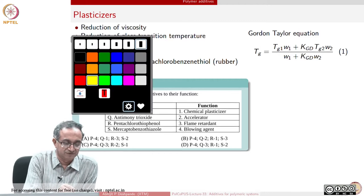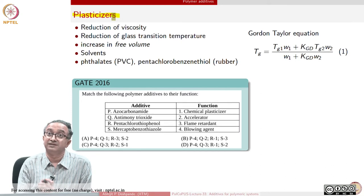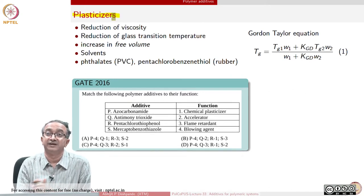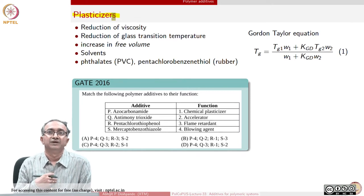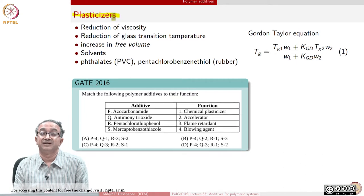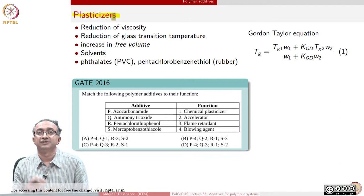Let us look at plasticizers as a class of additives, because they play a very important role in processing. Plasticizers are also important from a performance point of view because they determine segmental flexibility in the final part. Plasticizers are many times added to modify the mechanical properties of the material. For example, in PVC, if you want a flexible material such as used in bags, you may add plasticizer — but if you are making PVC pipes, which require a hard and stiff material, then you may not use plasticizer.